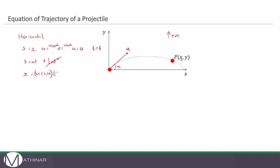So x is equal to u cos alpha multiplied by time and if we rearrange this we can make t the subject if we need so t is equal to x divided by u cos alpha. So that's the horizontal motion.